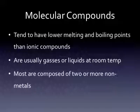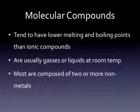Most importantly, this test is over ionic and covalent compounds. You need to be able to identify which is which, to name them correctly, and to draw them correctly. Honestly, all you have to do is look for a metal. If there's a metal, it's an ionic compound. If there are only non-metals, it's a covalent compound. All you're doing is looking for the presence of a metal.